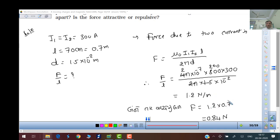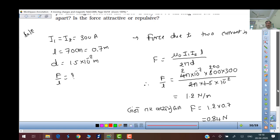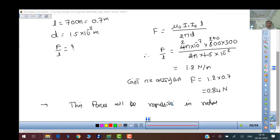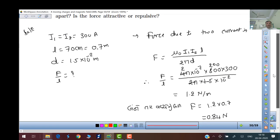This comes out to be 1.2 Newton per meter. Just multiply force times length, it gives you 0.84 Newton. And this force will be repulsion because currents are flowing in mutually opposite directions.